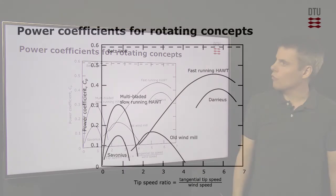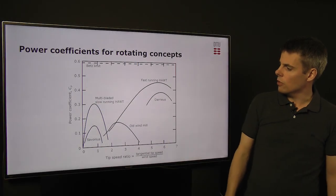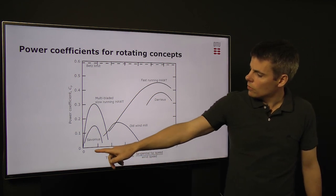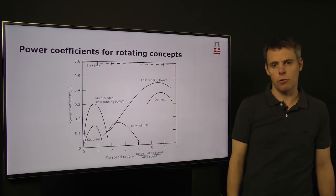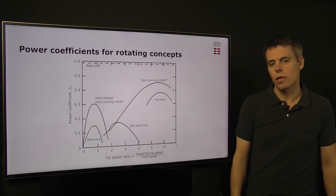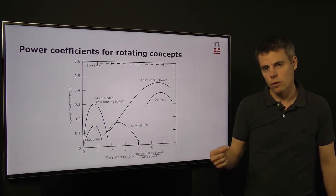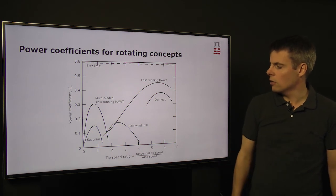Here I am showing the power coefficient for the different rotating concepts that have been derived over the years, both experimentally and numerically. These are some of the results that are coming out. On the y-axis we have the power coefficient and on the x-axis we have the tip speed ratio. The tip speed ratio is the ratio between the tangential speed of the rotor tip due to the rotation divided by the wind speed.